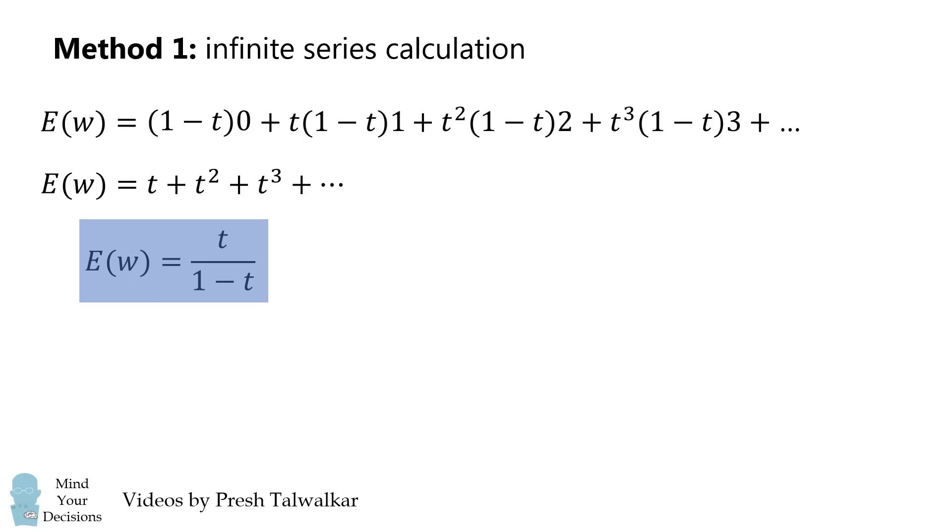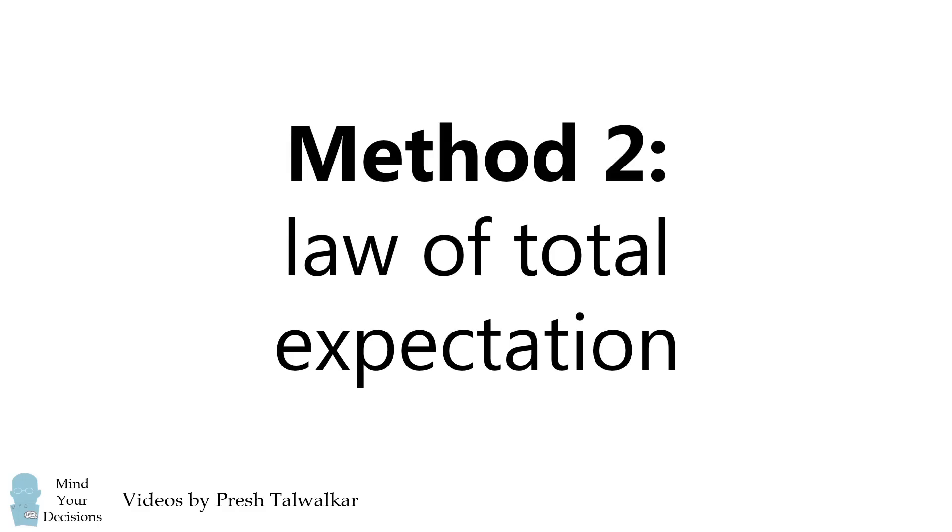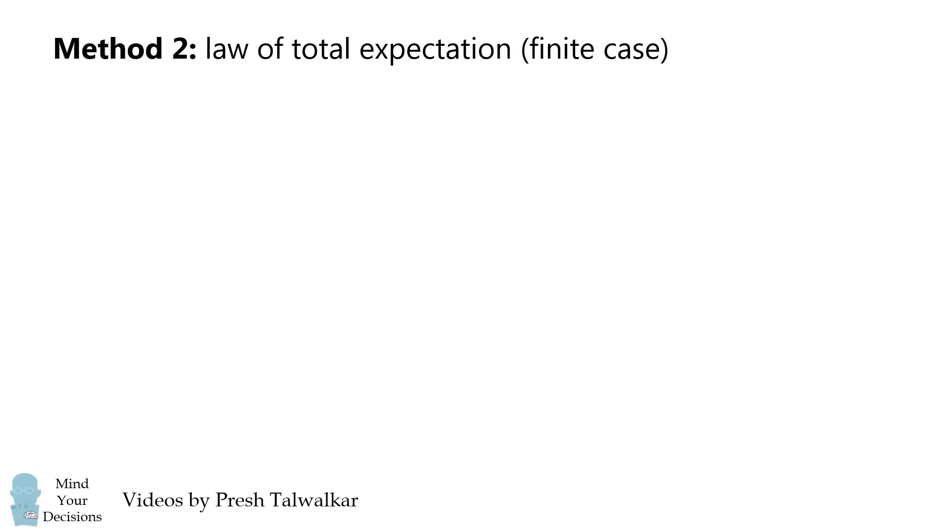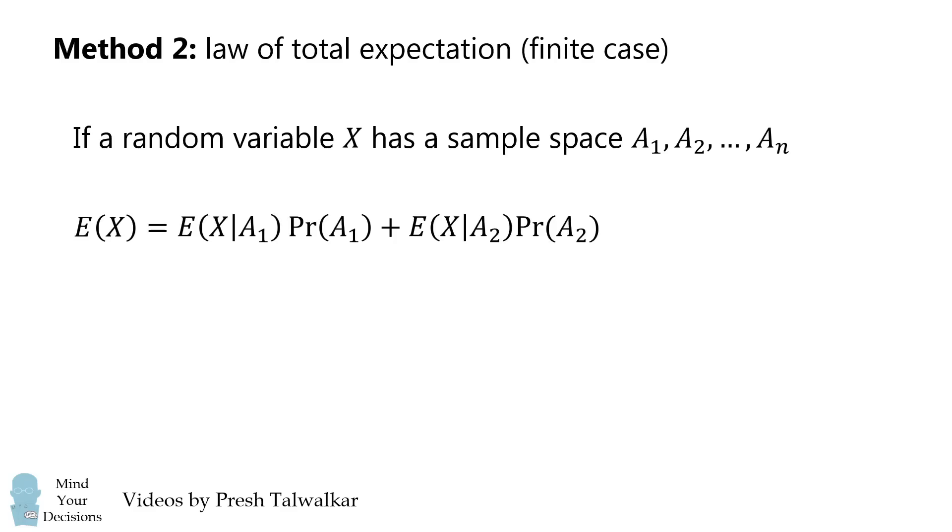So I think this is a pretty cool way to solve the problem, but there's another way that I think is also interesting. It uses the law of total expectation. For a finite random variable X, where we have a sample space going from a1 to an, it takes the following formula.